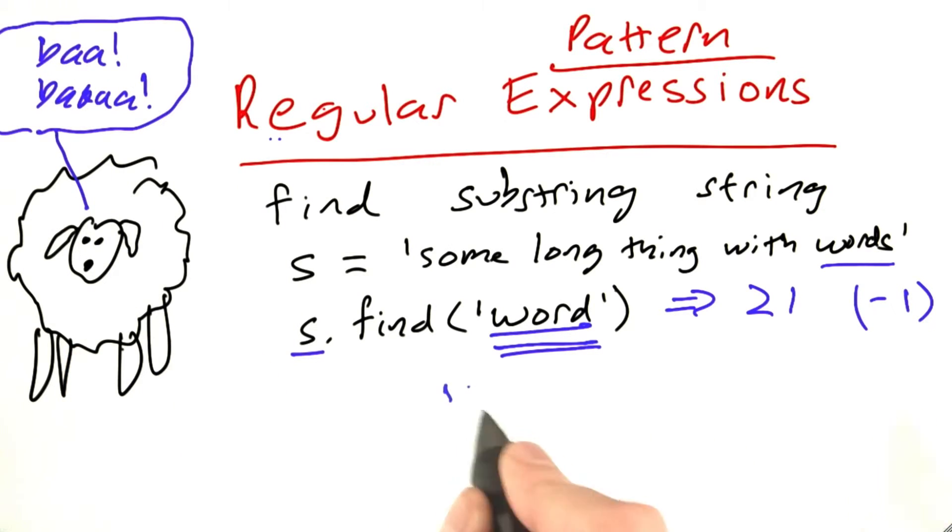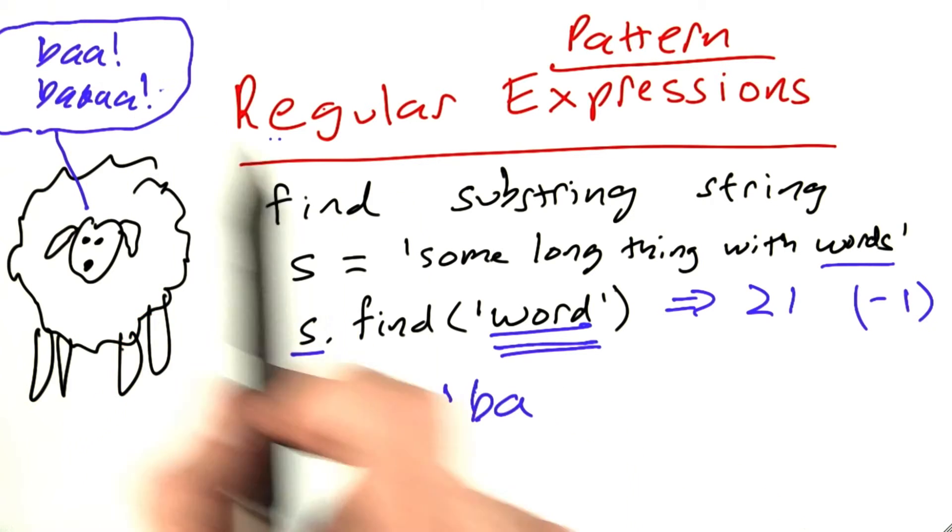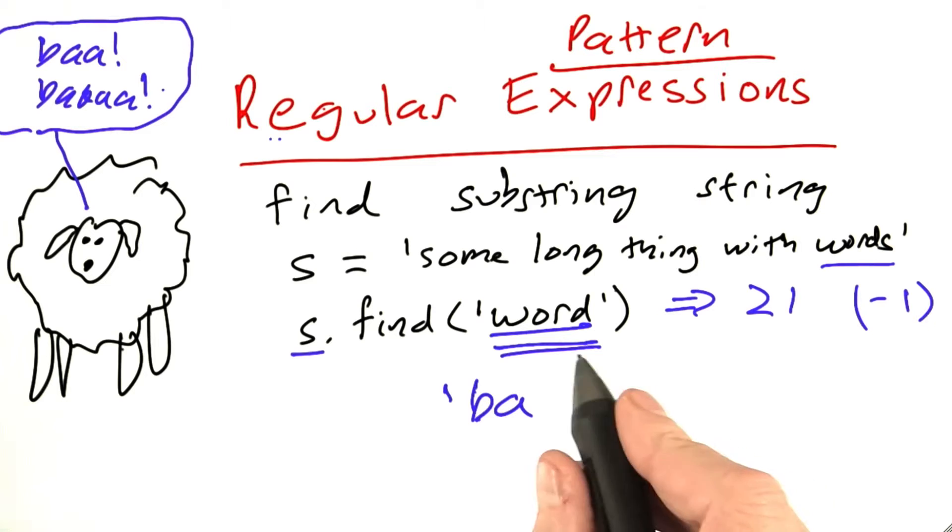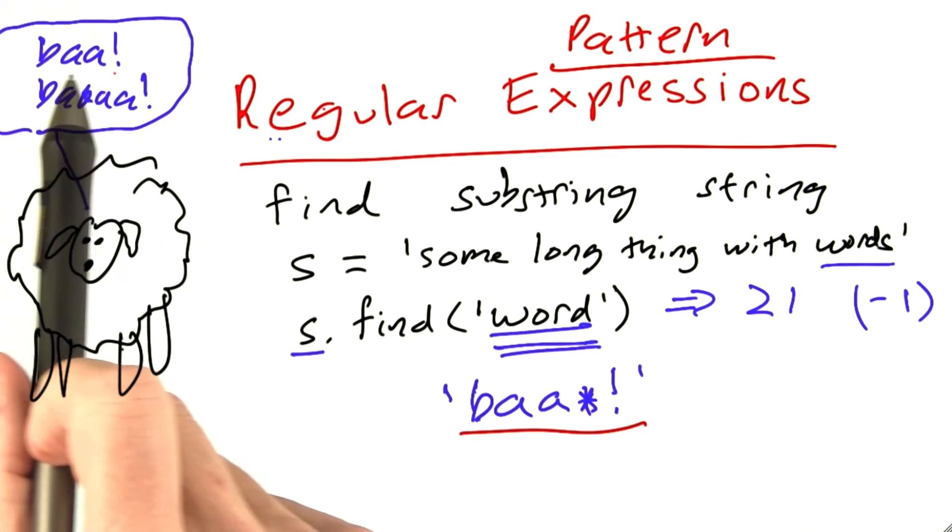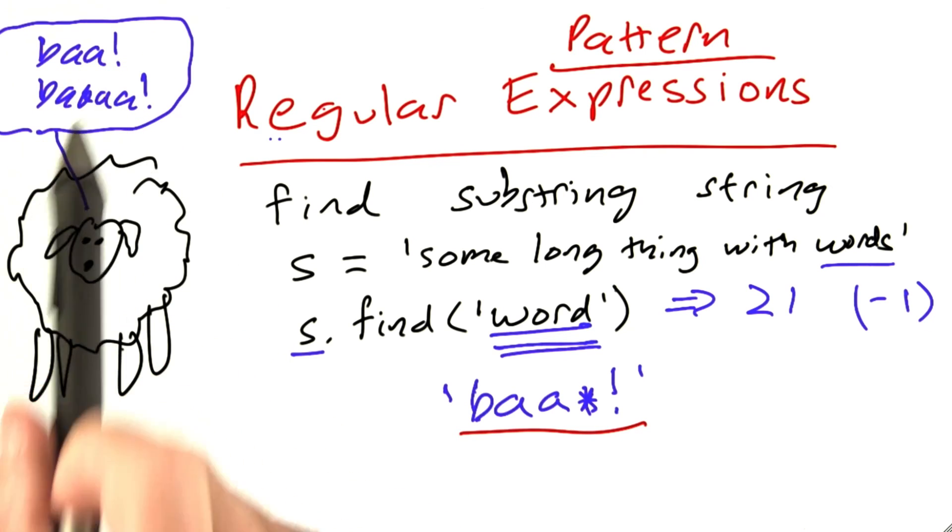We'll describe it as a string and the string starts with a b and is necessarily followed by an a and then followed by any number of subsequent a's and for that we'll use a special notation, a star or asterisk. The asterisk means any number of the preceding character and then it has to end in an exclamation point. So the asterisk is a special character. The exclamation point, the a's and the b's are normal characters. And this regular expression or pattern specifies this infinite language of b's with any number of a's more than one.